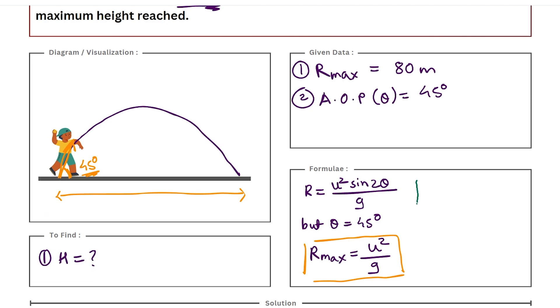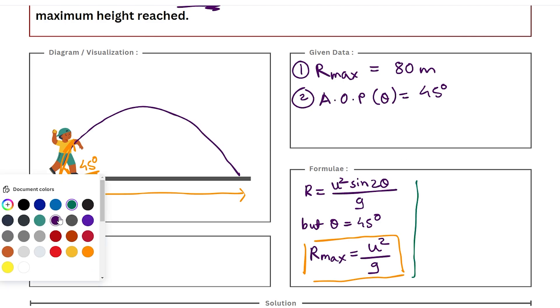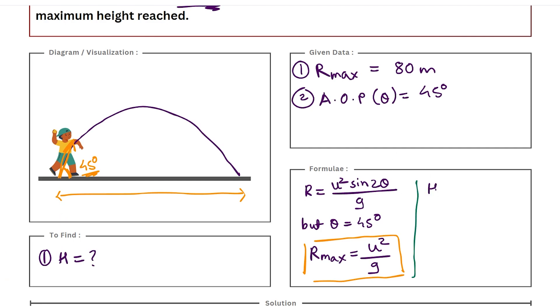Now what is the second set of formula we need to discuss? Well, we have to calculate height. So we'll be using the formula to calculate height. In projectile motion, one of the formulas to calculate height is given as H = u²sin²θ/2g. Now this is 2 theta and this is g.